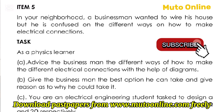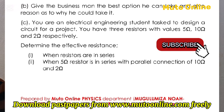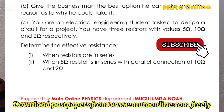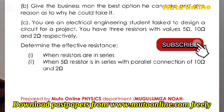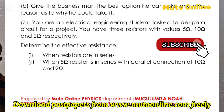Then part C: you are an electrical engineering student tasked to design a circuit for a project. You have three resistors with the values 5 ohms, 10 ohms, and 2 ohms respectively. Determine the effective resistance when, part A, all the resistors are in series, and part 2, when the 5 ohm resistor is in series with the parallel connection of 10 ohms and 2 ohms.